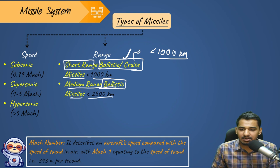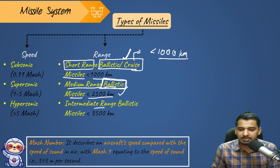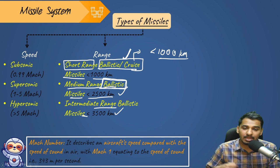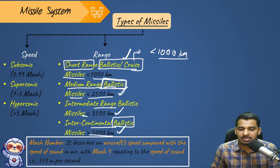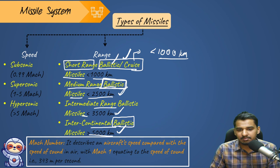Long range missiles are mostly ballistic only. Medium range ballistic missiles are less than 2500 km, intermediate range ballistic missiles are less than 3500 km, and intercontinental missiles are greater than 5000 km. Ballistic missiles can be both short and long range, but cruise missiles are generally short range only.